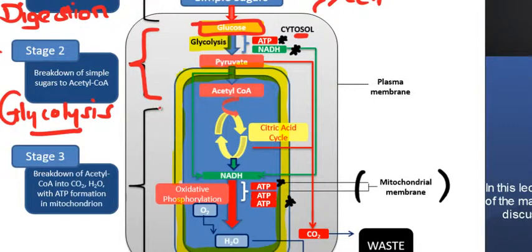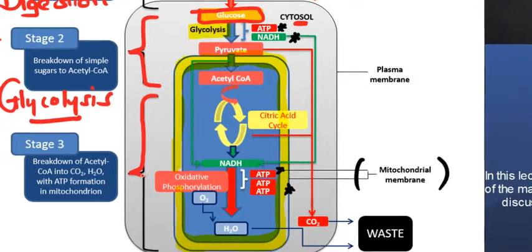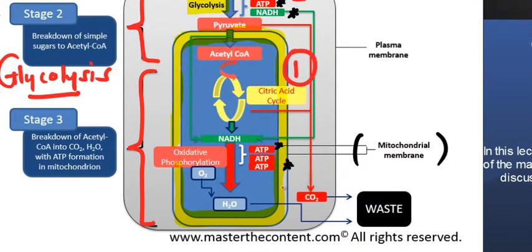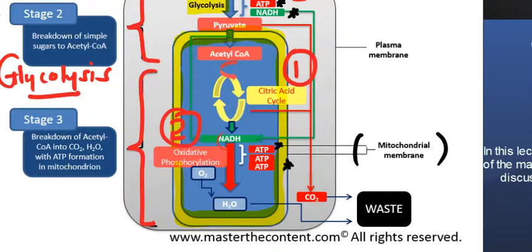That's stage two right there. Now in the third and final stage, we have two main processes: the first being the citric acid cycle, and the second being oxidative phosphorylation using the electron transport chain. The acetyl-CoA produced from glycolysis is fed into the citric acid cycle, which results in the formation of NADH — a really important molecule that is fed into the electron transport chain to produce massive loads of energy, with water and carbon dioxide as waste products.